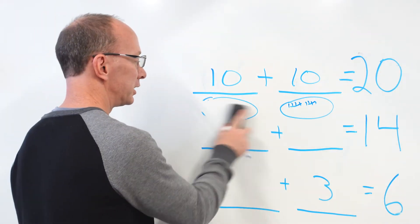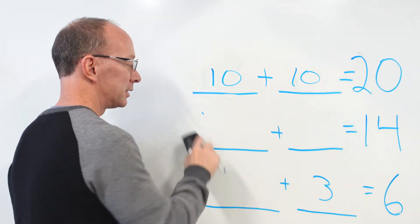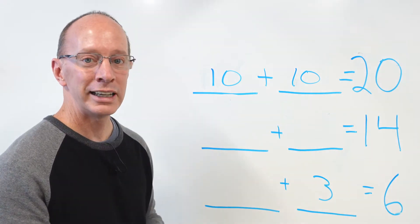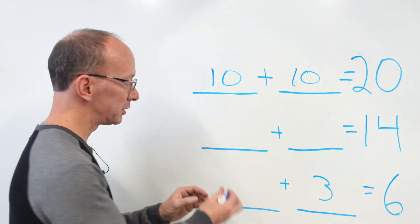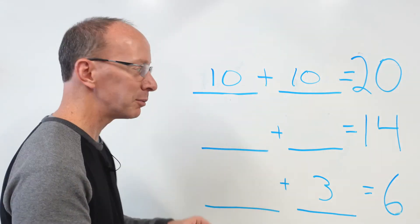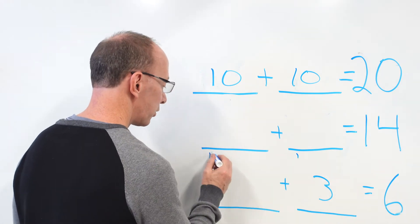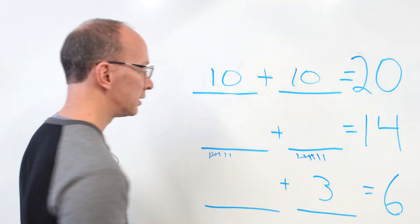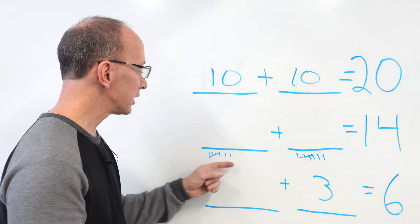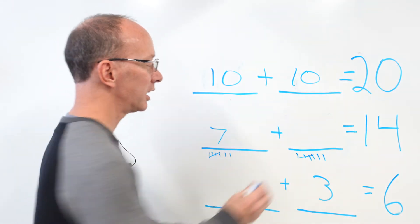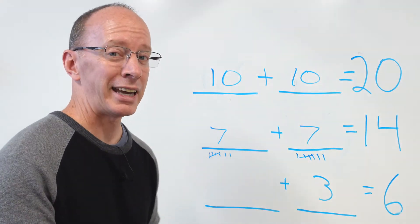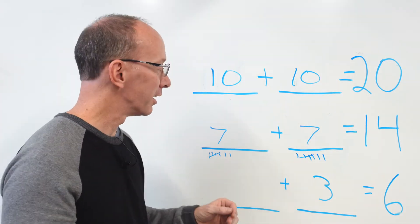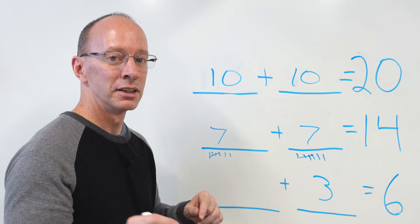All right, let's do the next one. How'd you do on that — pretty good? We're going to go to 14 and make two equal groups. I'm going to make the tally marks right down below here — different technique, but it still works. Let's go to 14: 1, 2, 3, 4, 5, 6, 7, 8, 9, 10, 11, 12, 13, 14. Let's count them up: 5, 6, 7 — siete! And 5, 6, 7 — siete! Teaching you a little Spanish on the side there. 7 plus 7 equals 14 — two equal groups of 7.